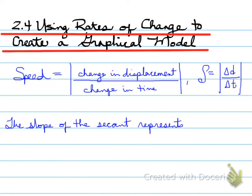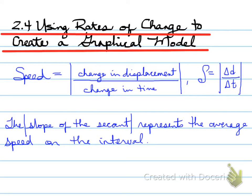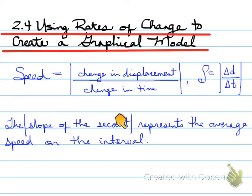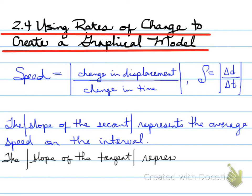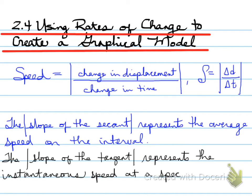The slope of the secant represents the average speed on the interval — specifically, the absolute value of the slope of the secant represents the average speed. So what would represent the instantaneous speed? Hopefully you're thinking that the absolute value of the slope of the tangent represents the instantaneous speed at a specific point. Knowing this, let's look further.